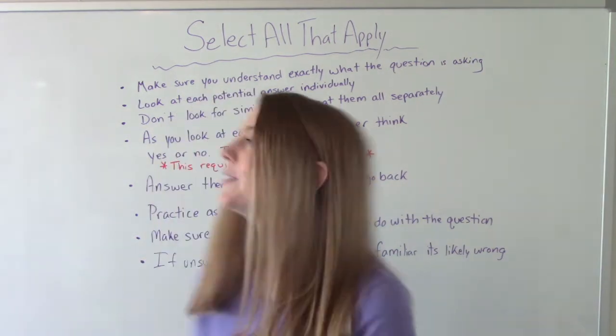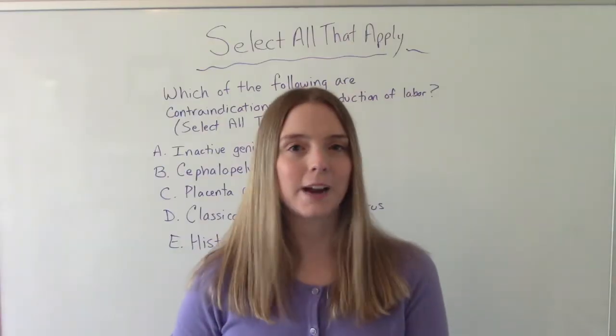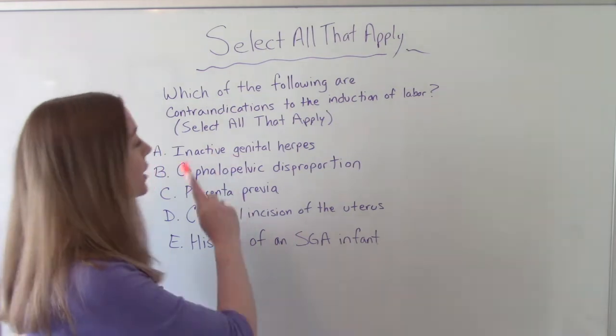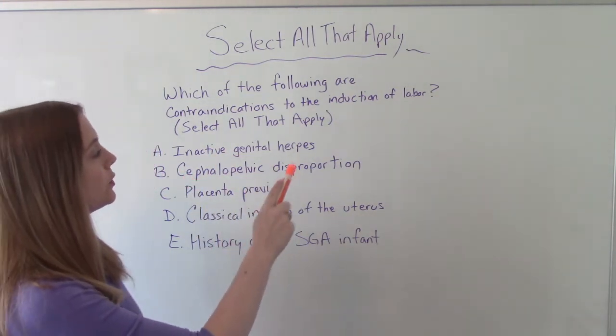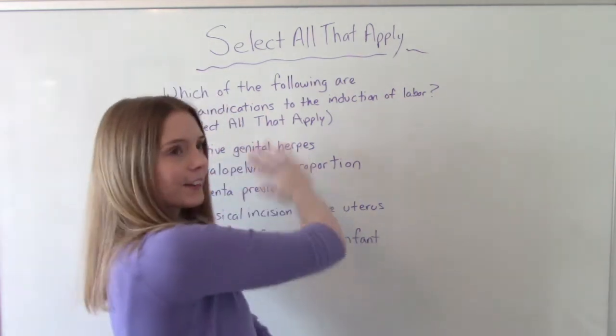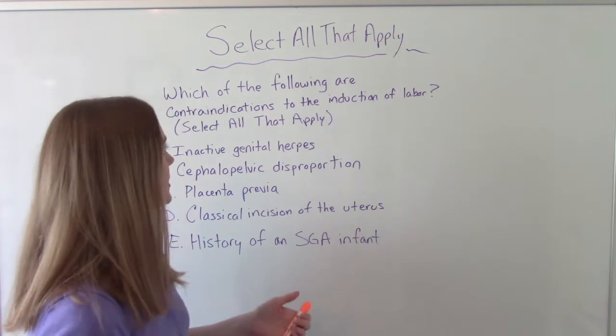So now, after I've kind of given you my tips, let's do a practice question. Now let's do a practice question. Which of the following are contraindications to the induction of labor? So before we even read any of our choices, let's make sure we understand the question. So the question is asking, which of these options is going to be a reason somebody should not be induced?